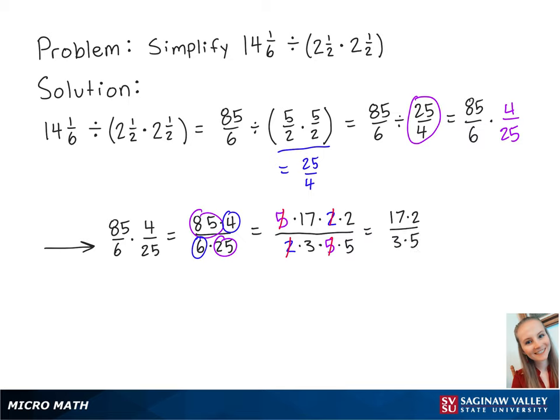Next, we need to multiply the numerator and the denominator. 17 times 2 equals 34, and 3 times 5 equals 15.